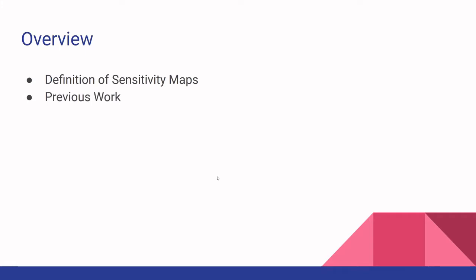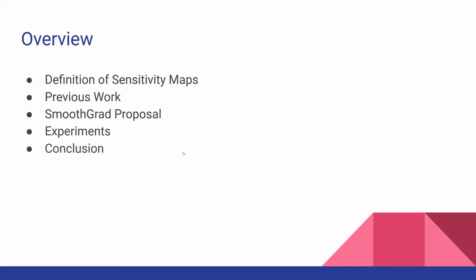For the overview of this paper, we're going to go in the following order: the definition of what a sensitivity map is, some previous work the authors mentioned, then right into the proposal, followed by experiments they performed, and we'll conclude by talking about the pros and cons of the paper.